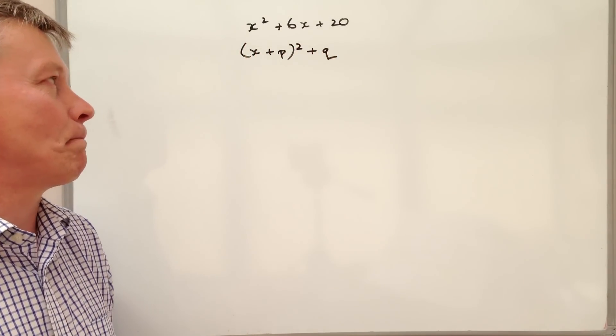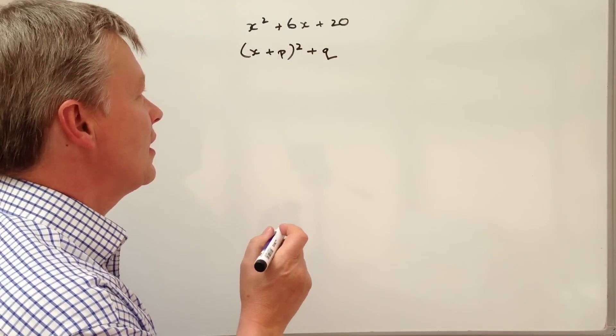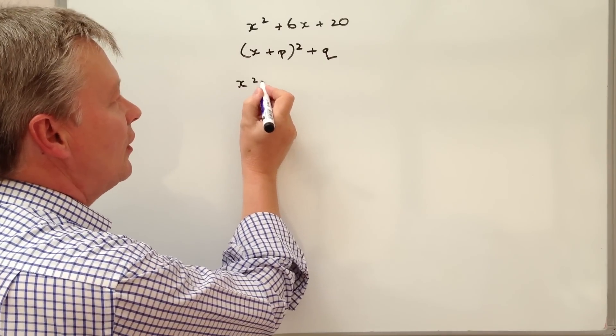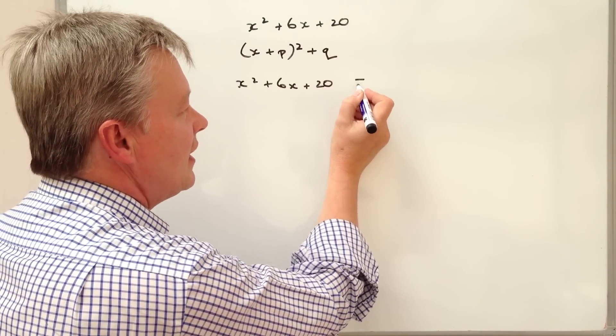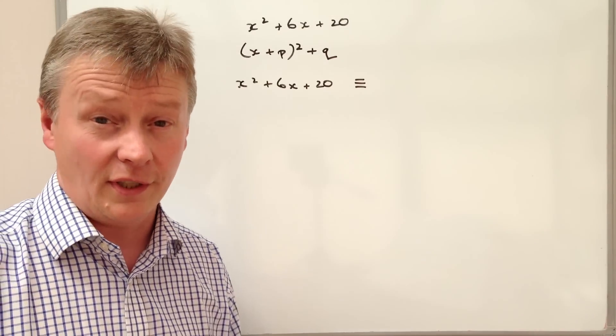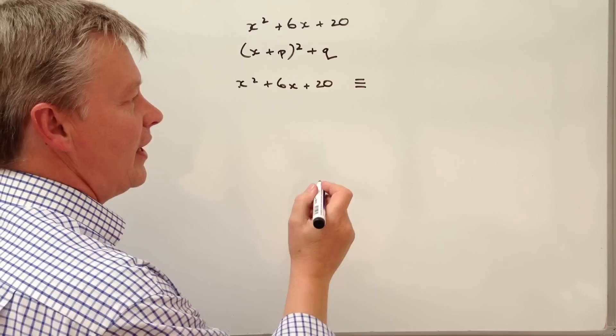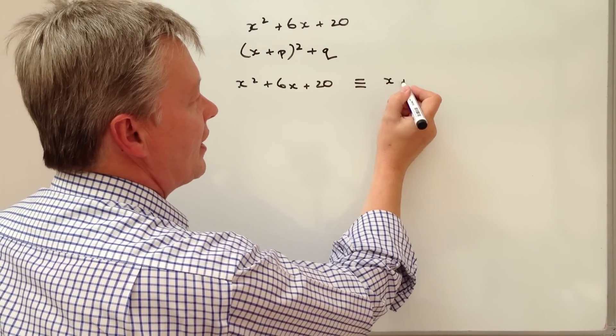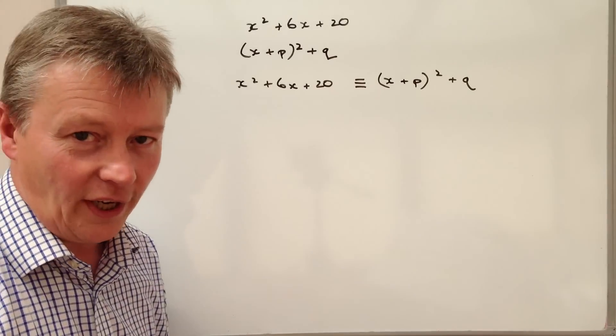So the way that it's quite useful to do is if you write it like this. So you'd write x squared plus 6x plus 20 and it's equivalent. So if you use three lines it's equivalent to the form of this which is going to be x plus p squared plus q.